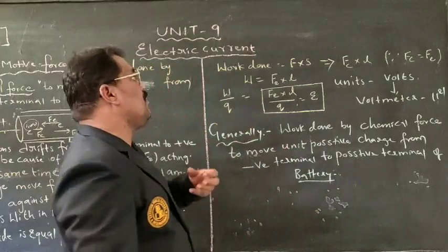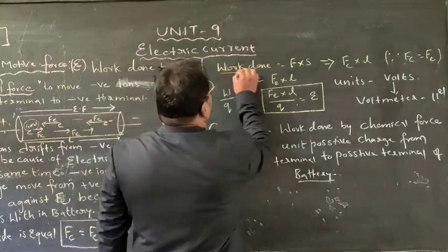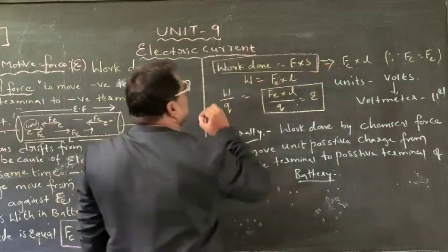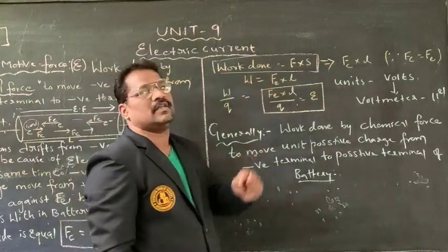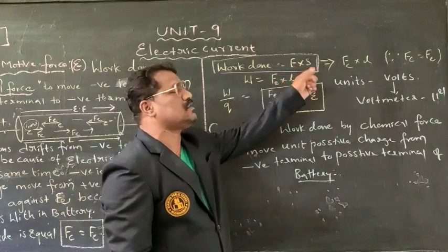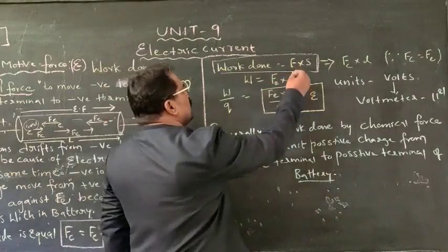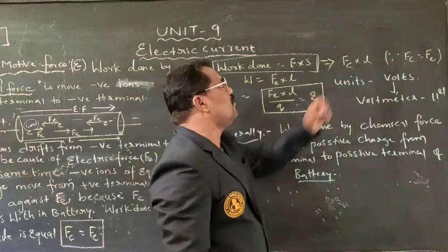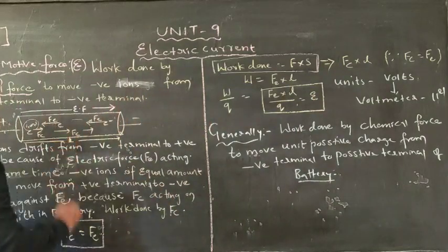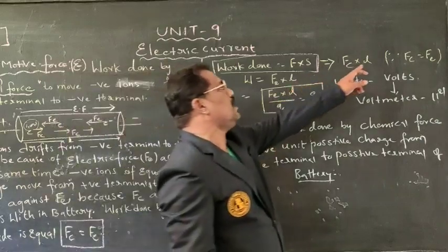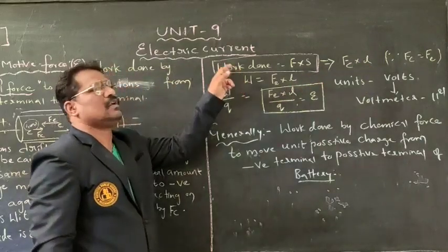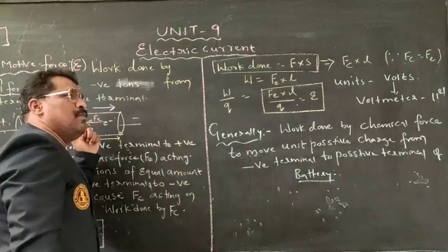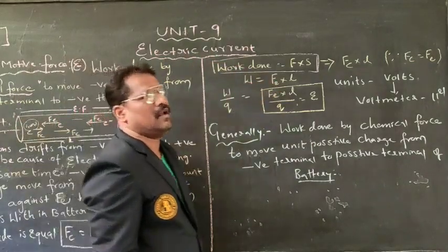If we form the concept of work done by the particular charged particles, work done is equal to force into displacement. Here which force is acting? Fc — chemical force. The length of this particular conductor is taken as L. Therefore, Fc into L gives us total work done on the negative ion to move from positive terminal to negative terminal.